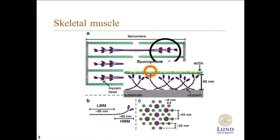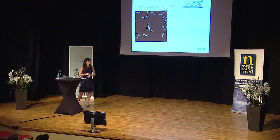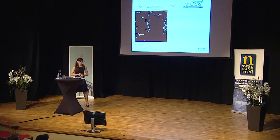What we actually do in our research is to take these actomyosin filaments out and put them on a surface, so that the myosin stick up from the surface and actually transport the actin along the device. On these actin filaments, we have labeled them with fluorescent probes so that we can actually follow them as they move on the surface.